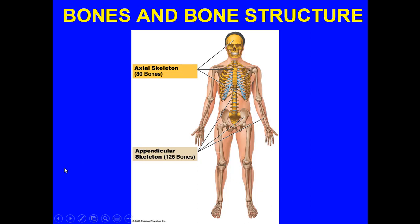When you look at the difference between the axial skeleton and the appendicular skeleton, the axial skeleton is 80 bones and the appendicular is 126 bones.